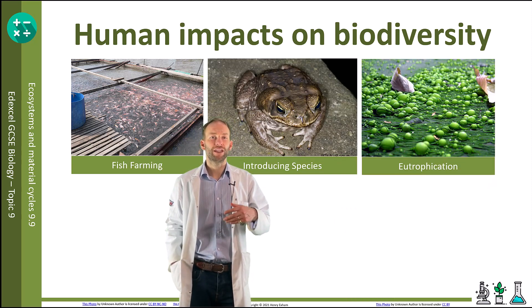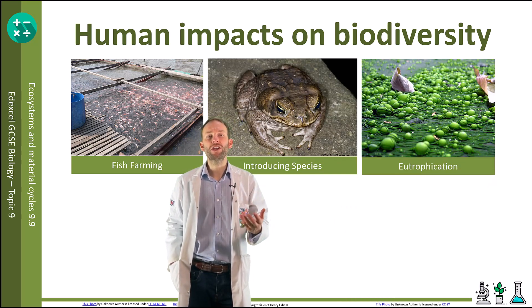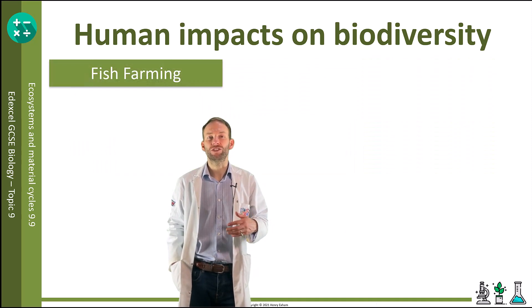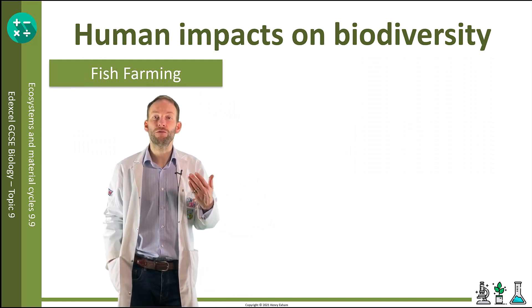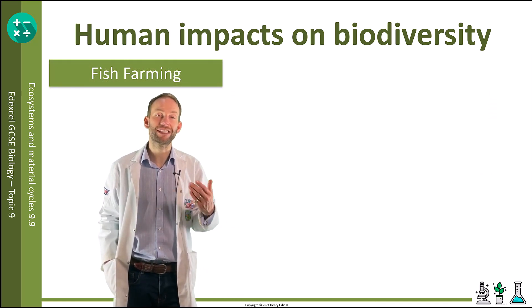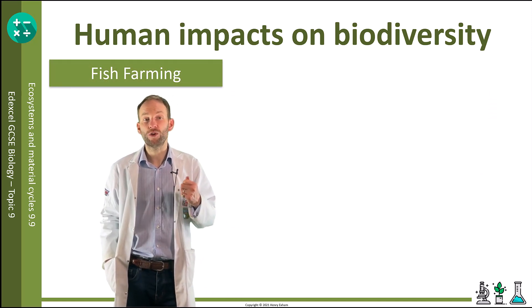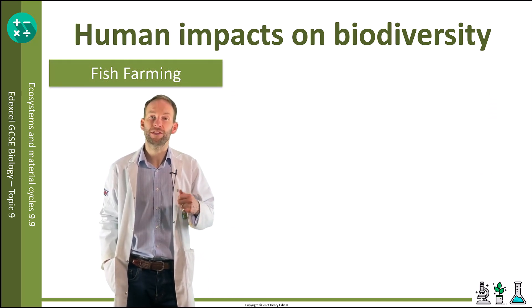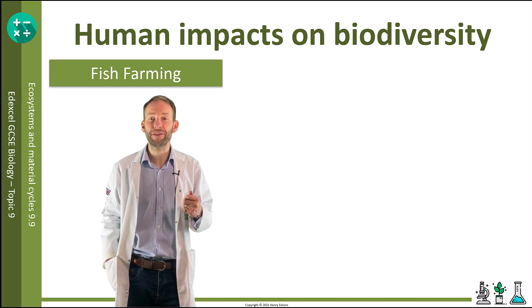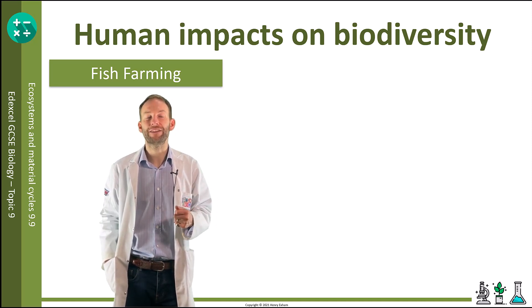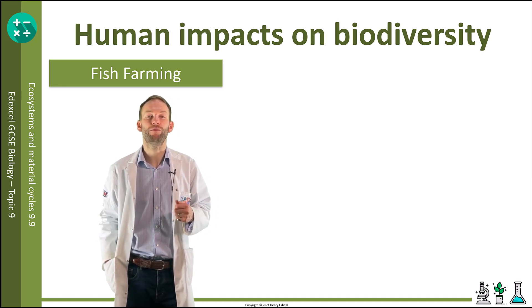So, fish farming. With the growing global population, overfishing of wild fish stocks has damaged ecosystems. Therefore more fish farms have been introduced. However, these can also have negative impacts on biodiversity.